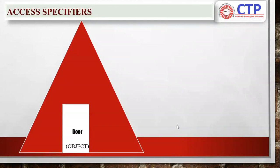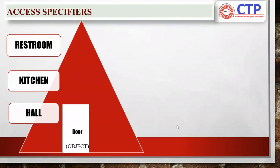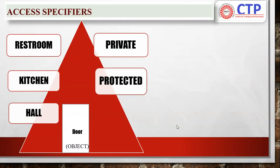After entering the door, you may encounter three kinds of rooms: a restroom, a kitchen, or a hall. Some rooms everyone can access, for some rooms only a few people are allowed, and for some rooms only you are allowed to enter — there are restrictions. Within a class, you can classify your data under three levels. One is called private, another is called protected, and the third is called public.